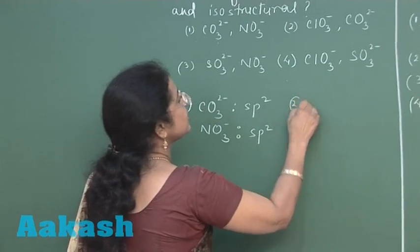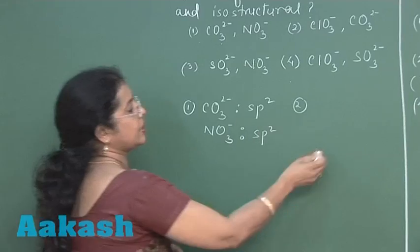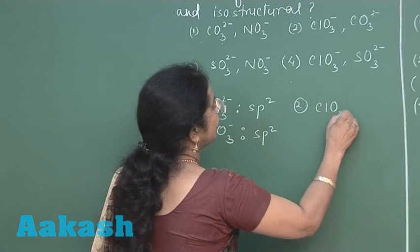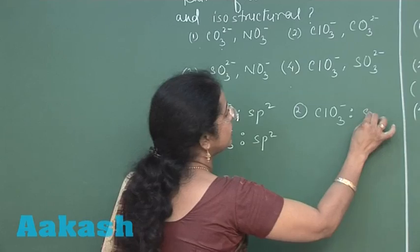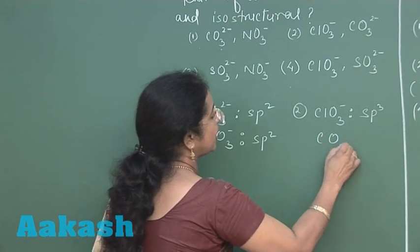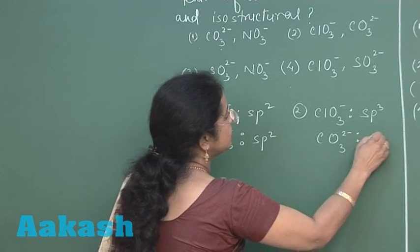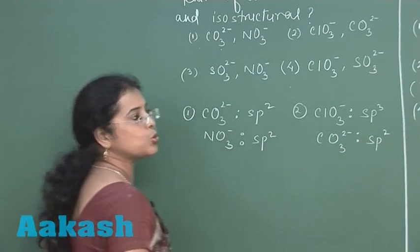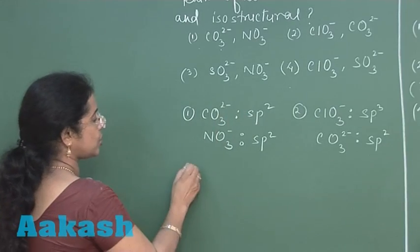Now, second case is chlorate ion. In chlorate ion hybrid state of chlorine is sp3 while in carbonate ion hybrid state is sp2. So these two compounds cannot be isostructural.